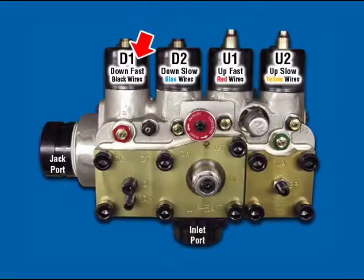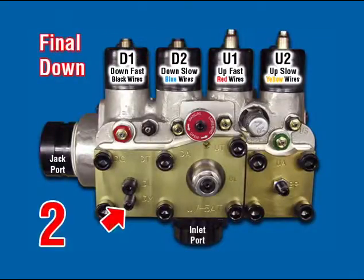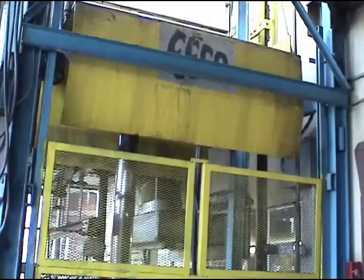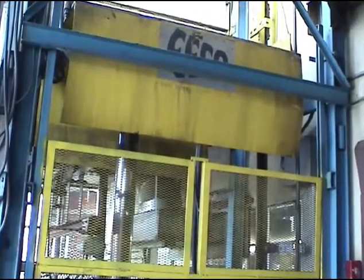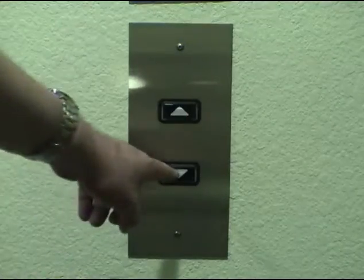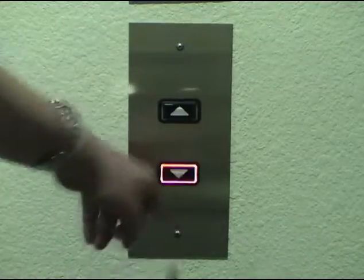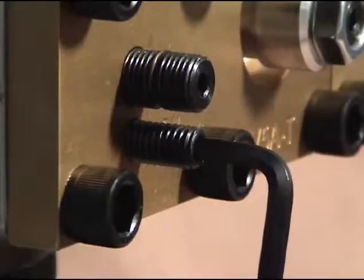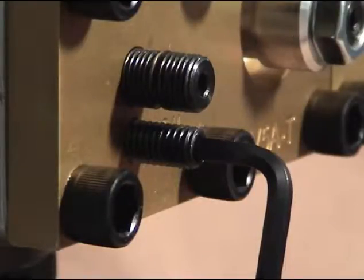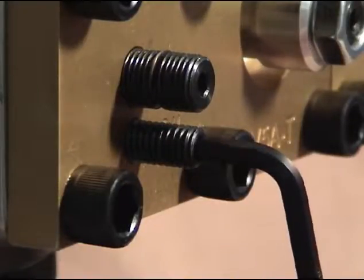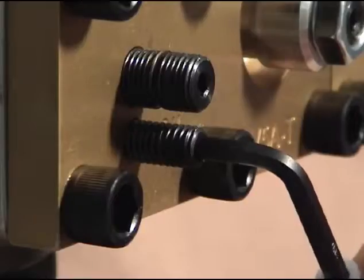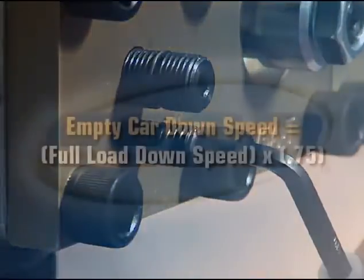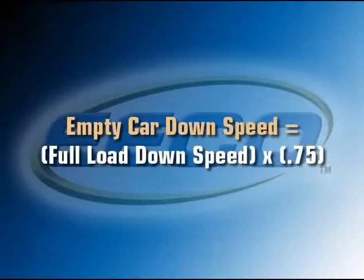Reconnect D1. DM — down main. Car at upper floor with no load. Register a down call. Turn DM clockwise for slower speed or counterclockwise for faster speed to set down speed at 25% less than contract full load speed.